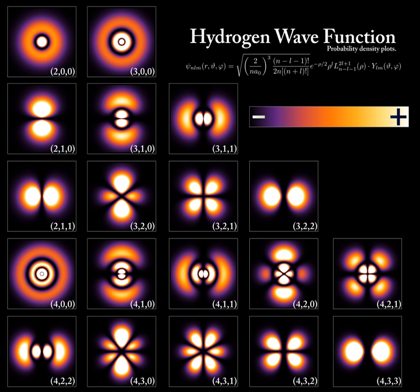Each wave state has a single discrete spin depending on its superposition. Thus, despite the popular analogy to planets revolving around the Sun, electrons cannot be described simply as solid particles. In addition, atomic orbitals do not closely resemble a planet's elliptical path in ordinary atoms. A more accurate analogy might be that of a large and often oddly shaped electron distributed around a relatively tiny atomic nucleus. Atomic orbitals exactly describe the shape of this 'atmosphere' only when a single electron is present in an atom. When more electrons are added, the additional electrons tend to more evenly fill in a volume of space around the nucleus so that the resulting electron cloud tends toward a generally spherical zone of probability, because of the uncertainty principle.